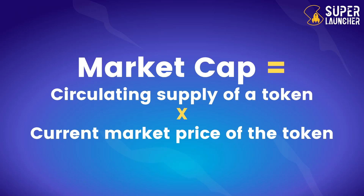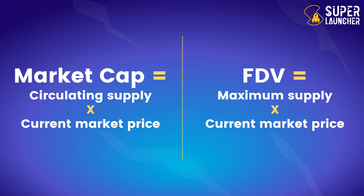The key difference is that market cap takes into consideration the circulating supply, while the fully diluted valuation takes into account the maximum supply of a token. When a token is listed, there are vested and locked tokens that will be unlocked according to a vesting schedule. If the price doesn't change, the market cap would increase over time as the circulating supply increases with all the unlocked tokens.